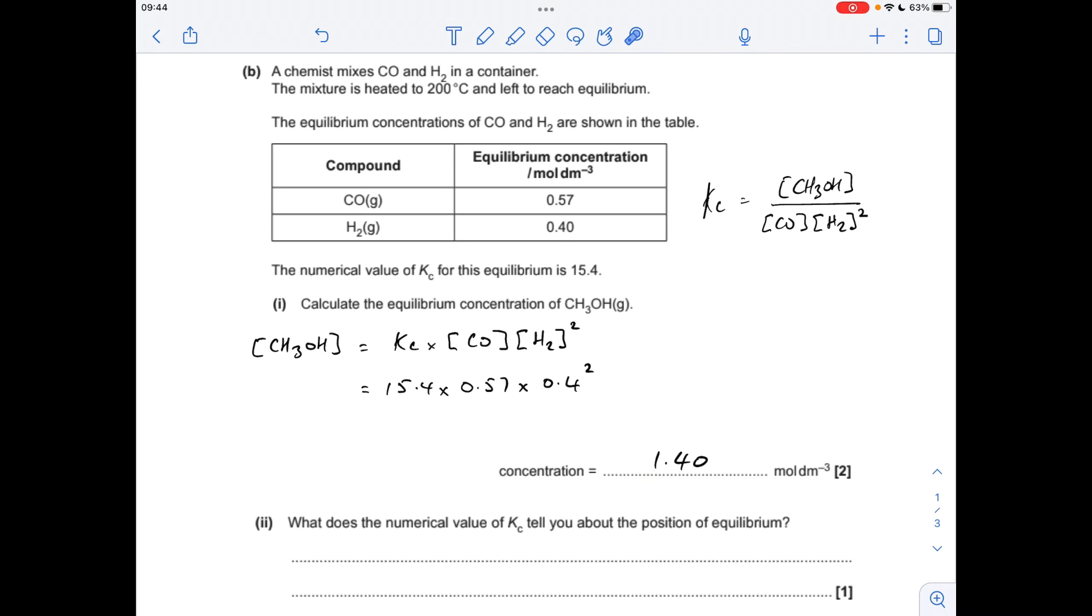Next part of B, we've got to talk about the significance of this 15.4 value for KC, so just remember where KC comes from. It's a measure of the equilibrium concentration of the products to reactants, so the fact that it's greater than 1 means this equilibrium must be over to the right-hand side, or on the product side.